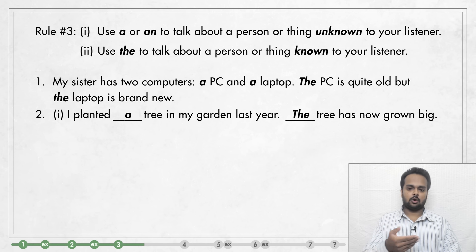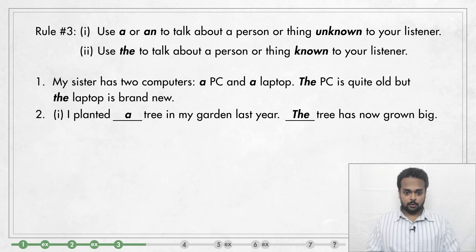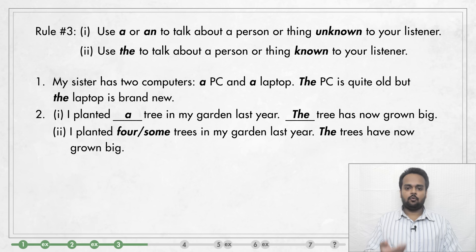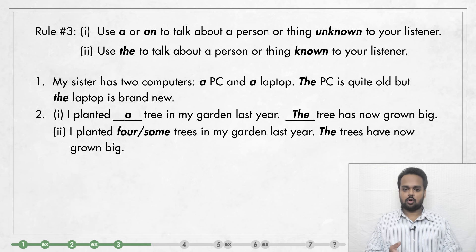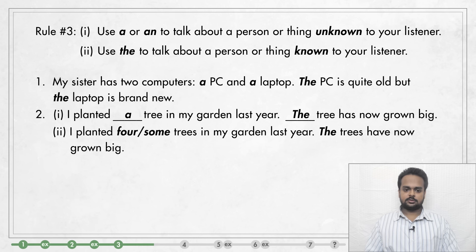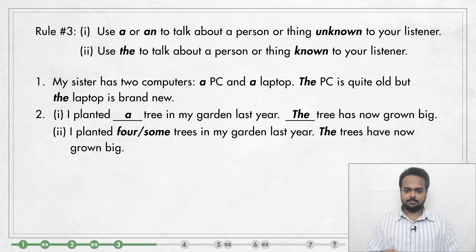But what if I planted two, three or four trees? Well, you know that we cannot use A or AN with plurals. But we can mention the exact number. We can say: I planted four trees in my garden last year. Or if I don't want to say the number, I can say: I planted some trees. And then: The trees have now grown big. THE simply means that you know which trees I'm talking about. In both of these examples, we first introduce something with A, AN or SOME, and then we say THE because the listener knows about them.